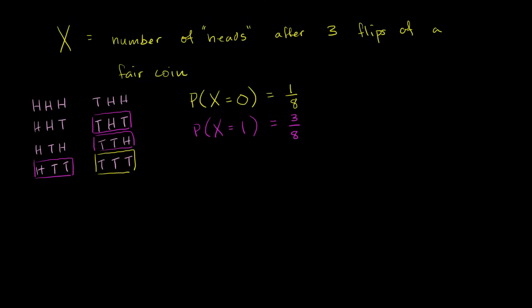What's the probability that our random variable X is going to be equal to two? For X to equal two, we must have gotten two heads when we flipped the coin three times. The outcomes heads-heads-tails, heads-tails-heads, and tails-heads-heads each meet that constraint — three out of the eight equally likely outcomes. So this is also a 3/8 probability.